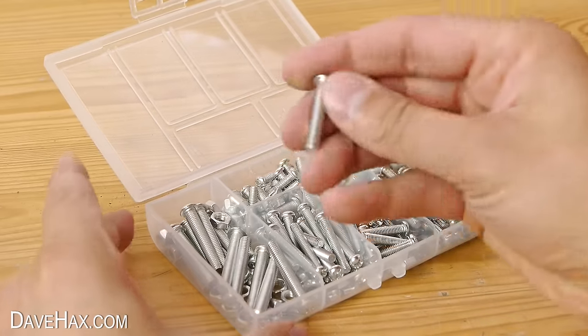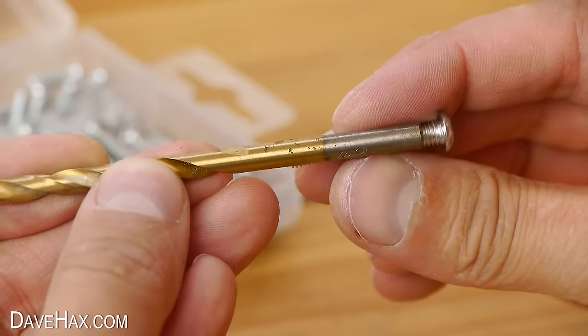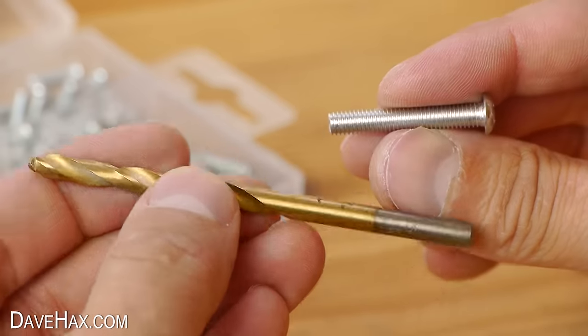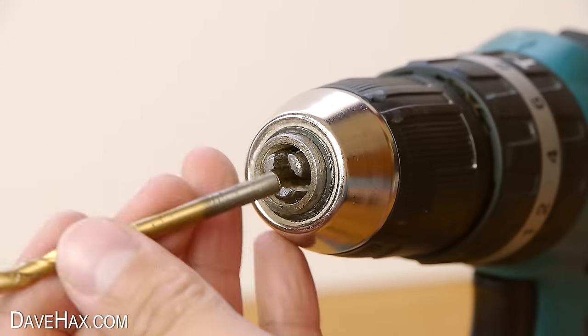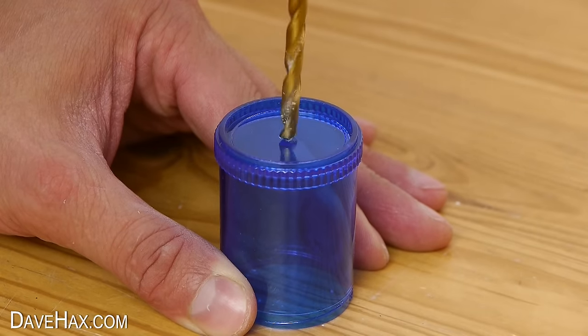First select a bolt and make sure you've got a drill bit which is just big enough for the bolt to go through. Then carefully drill your hole through the base of the sharpener.